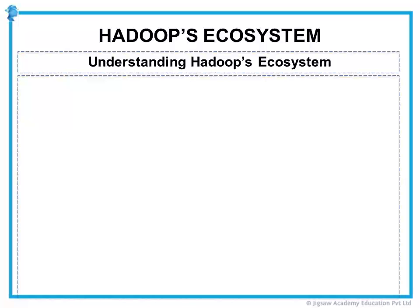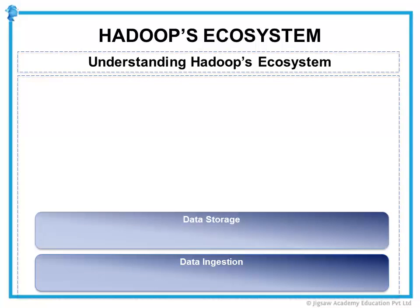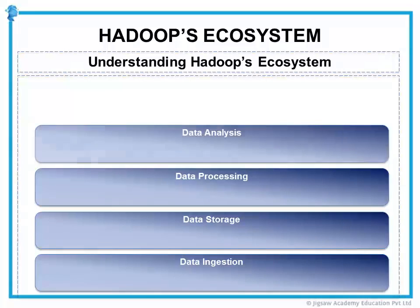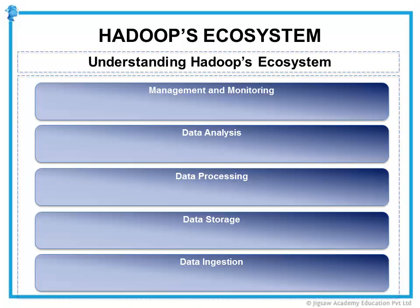All these projects are not meant to all be used together. Some may even try to solve the same problem in many different ways. What unites them is that they each seek to tap into the scalability and power of Hadoop, particularly the HDFS component of Hadoop. Typically, there are five components that form an entire solution: data ingestion, data storage, data processing, data analysis, and finally management and monitoring. Now, let us look at the various projects of the Hadoop ecosystem that perform the above functions.